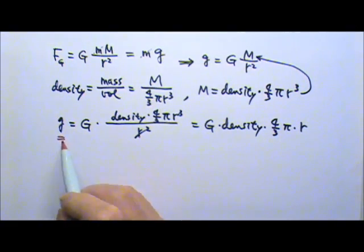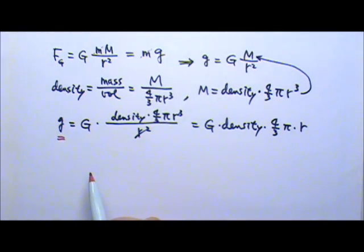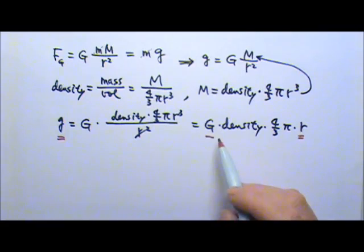The little g, the gravitational acceleration, was first measured by Galileo. The radius of the earth was first measured by Eratosthenes around 240 B.C. So once the big G was measured, Cavendish had the density of the earth.